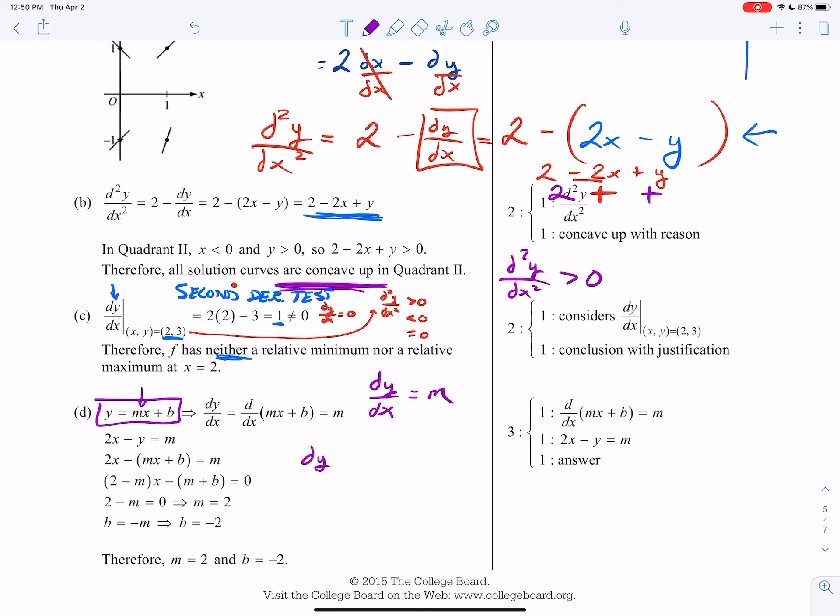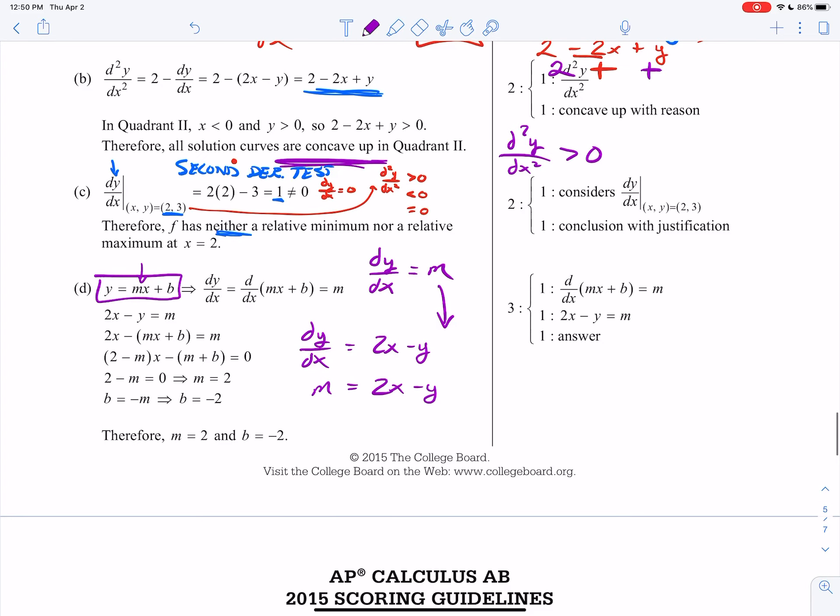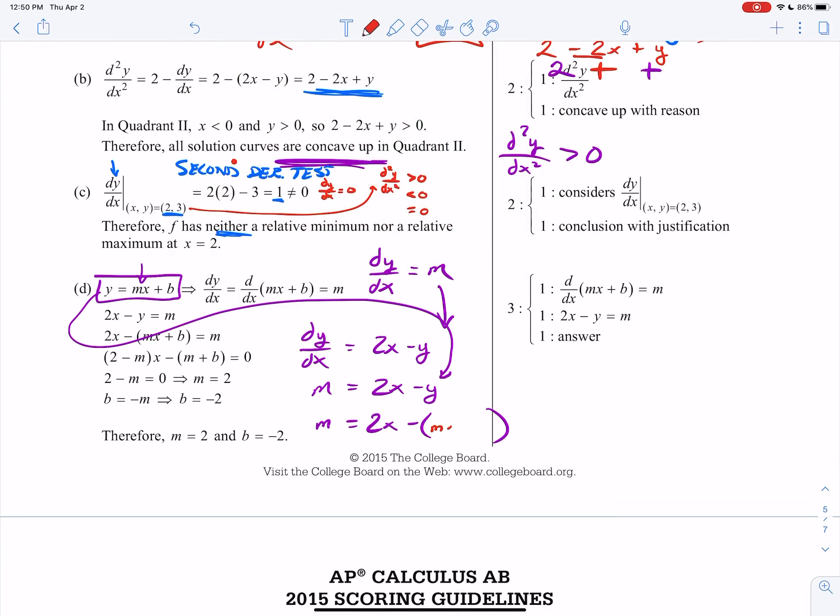So our original differential equation, dy/dx is equal to 2x minus y. We now know that since this is a solution, this whole thing here has to equal m. Now, originally, we know that y is equal to mx plus b, so I'm going to plug that in. Again, understand it, but don't spend too much time on this problem here. Here's what we have. We have m equals 2x minus mx minus b. I'm going to bring this m over. So now I have 0 equals 2x minus mx minus m minus b.